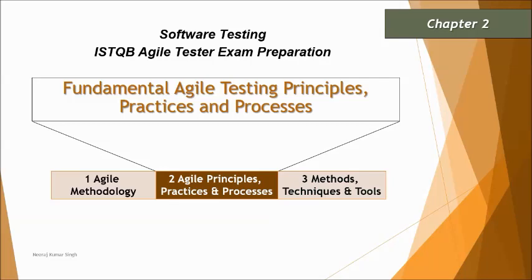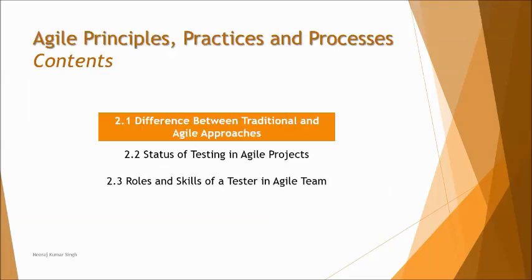We are talking about Chapter 2: Fundamental Agile Testing Principles, Practices and Process. Here we'll be digging into more details, understanding what exactly the Agile test principles, practices, and process are. We have three topics to understand: the difference between traditional and Agile approaches, the status of testing in Agile projects, and the role and skills of a tester in an Agile team.